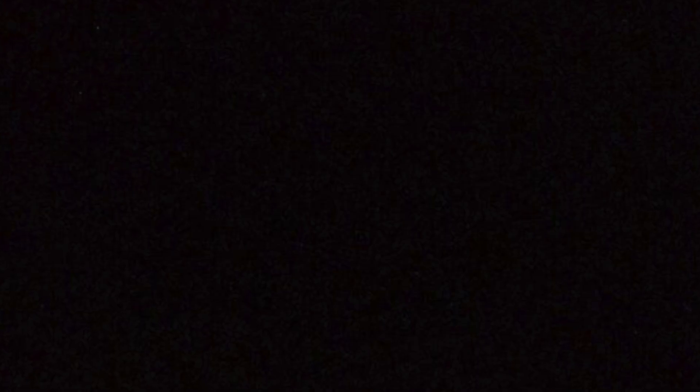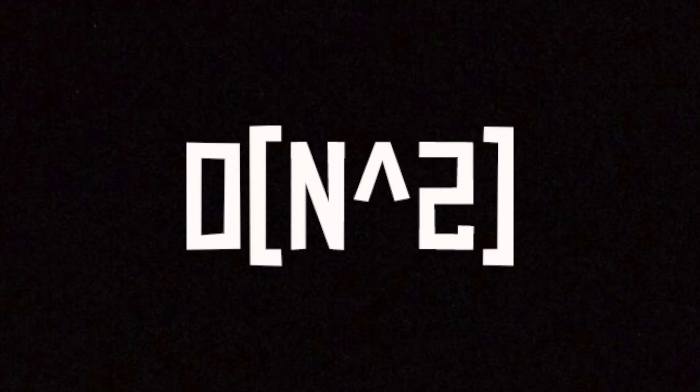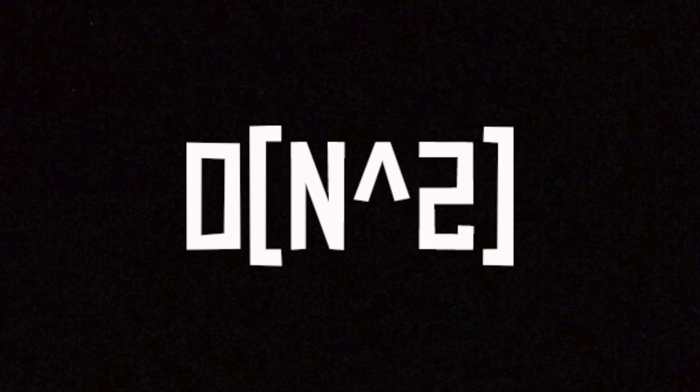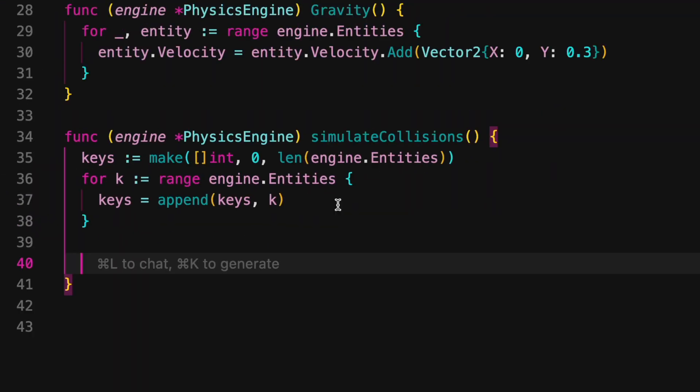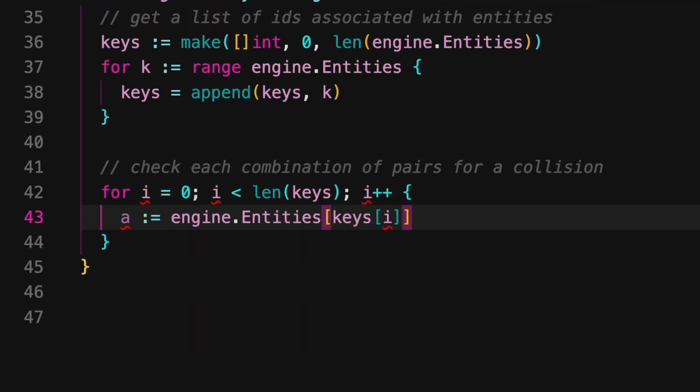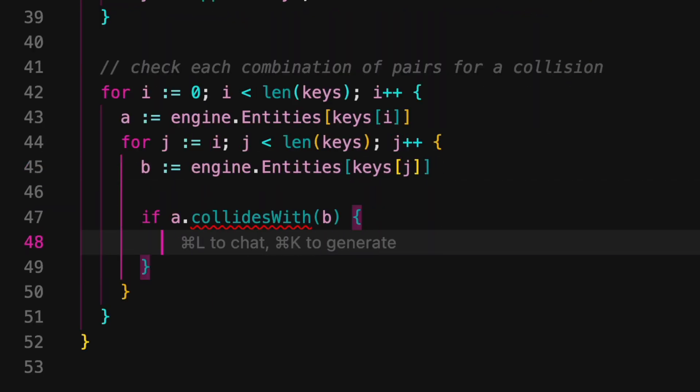This is then done with every other entity in the simulation. You can see how this is naive, as it's taking every combination of pairs in our simulation and doing some computation, which would not scale if we had, let's say, a thousand balls simulated at once. But for now, it's good enough. So to implement this, we do the classic double for loop, and check every combination of entity pairs in the simulation if that pair is colliding. If they are colliding, then we want to handle that collision.